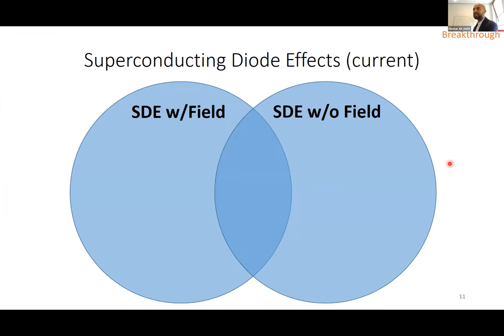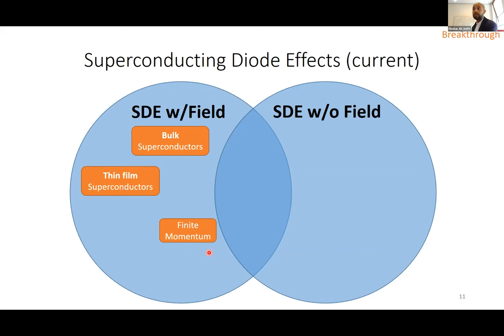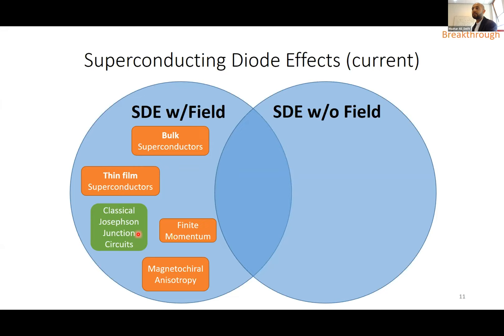The current status of the field: the superconducting diode effect has been seen with field in bulk superconductors and in thin films of superconductors. Mechanisms include finite momentum pairing and magnetochiral anisotropy. There are also classical Josephson junction circuits where combinations of junctions can realize a diode effect. And very recently, it's been realized both with and without field in various quantum material Josephson junctions, where the quantum material's intrinsic properties modulate superconductivity across the junction.